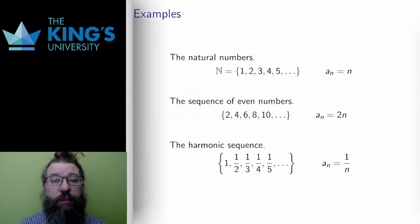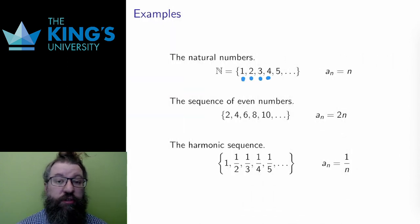Now let me get into examples. The natural numbers are a sequence themselves. Each a_n is just n. The index is the element. As a function, this is the function that sends each natural number to itself.